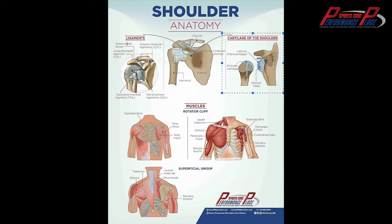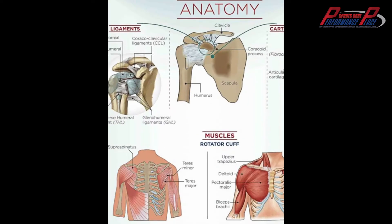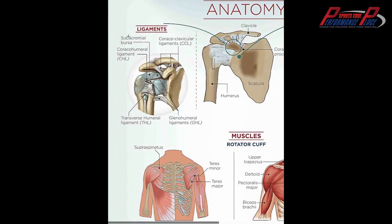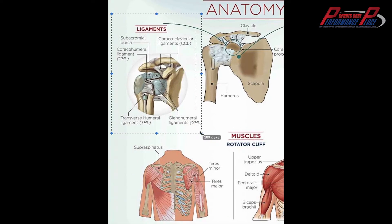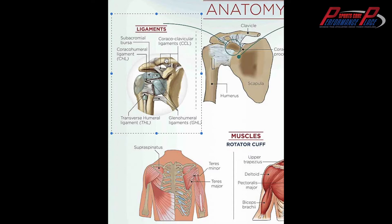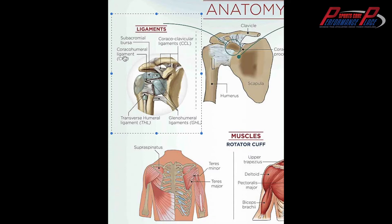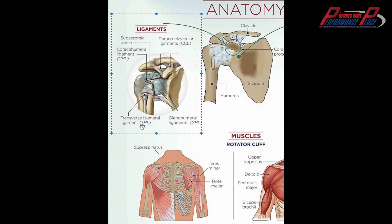Now we're going to go into the ligaments over here on the left side. I won't spend too much time on this because ligaments of the shoulder — people don't really want to know too much about them. But you can see how many there are. They have complex names: the CCL, the CHL, the GHL, the THL.